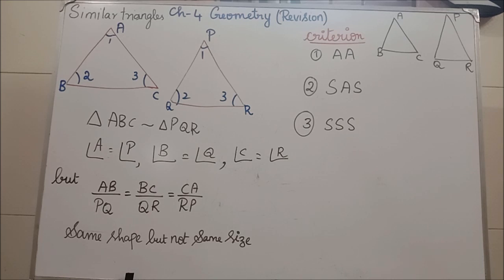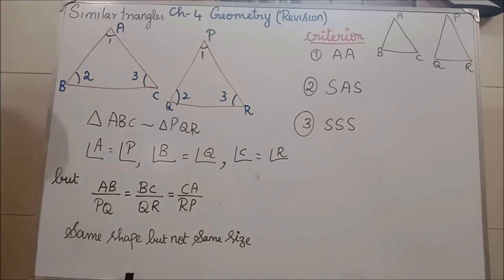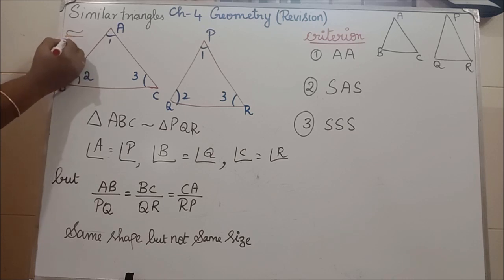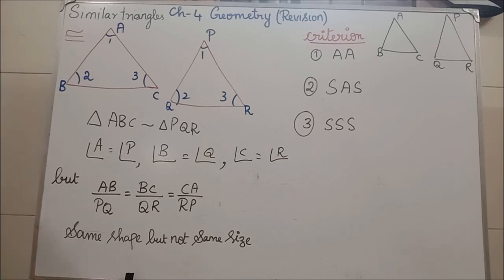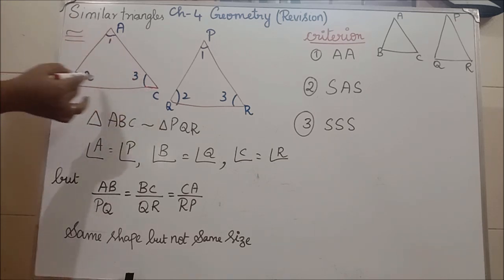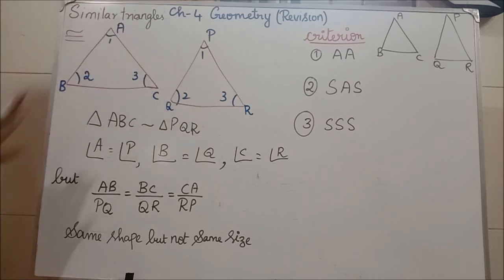If you need a full explanation, you can go through the part 1 video. Along with similar triangles, we also learned about congruent triangles. Congruent triangles are represented by a wavy line followed by equals sign. Congruent means same shape and same size — both triangles should have the same shape and same size.